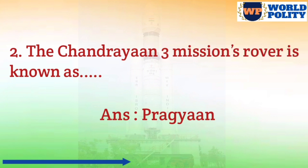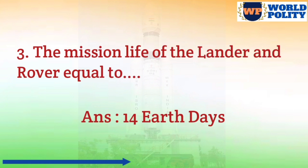Question number 2: the Chandrayaan 3 mission's rover is known as? The answer is rover Pragyaan. Question number 3: the mission life of the lander and rover is equal to? The answer is 14 Earth days.